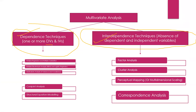Dependence means when one variable is dependent on another — there is the concept of dependent variable (DV) and independent variable (IV). In interdependence techniques, there is no such concept — there is an absence of dependent and independent variables. All the factors are calculated at a time.